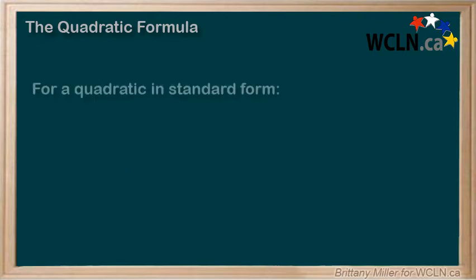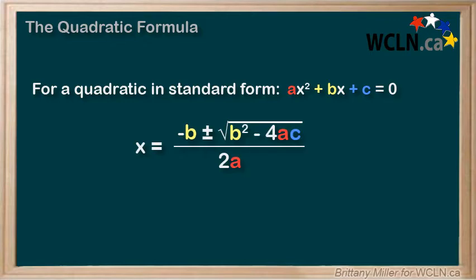So, if you have a quadratic in standard form ax squared plus bx plus c, the solutions will always be x equals negative b plus or minus the square root of b squared minus 4ac all over 2a.